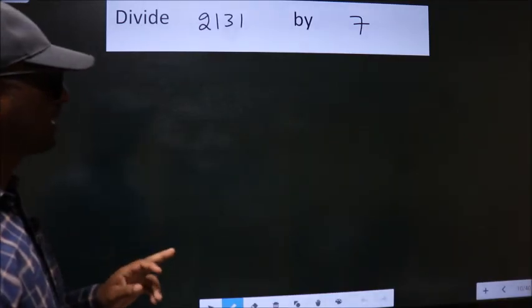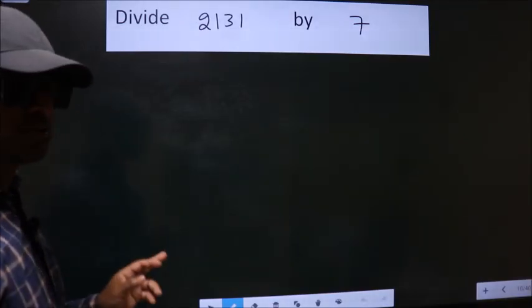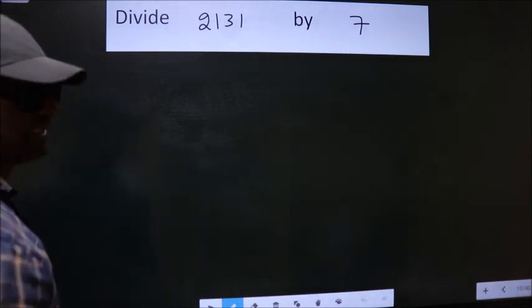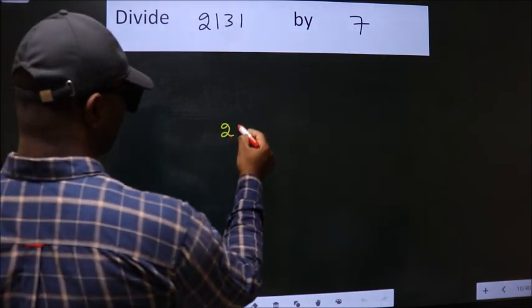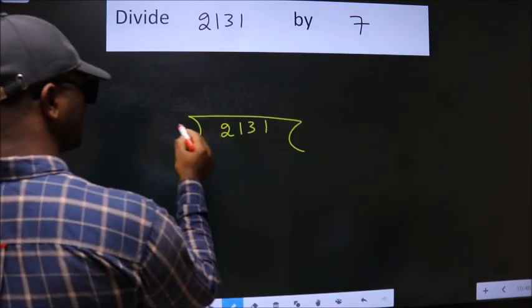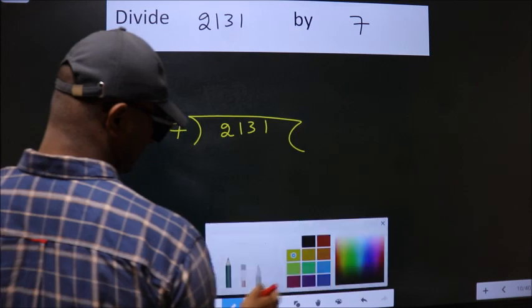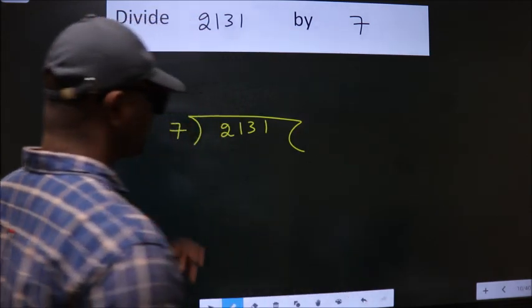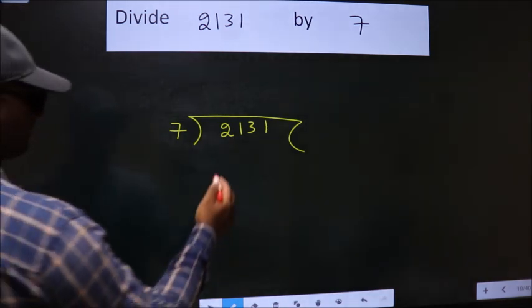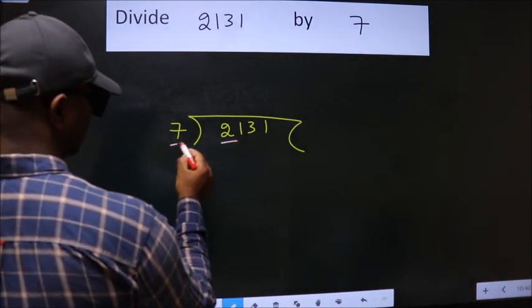Divide 2131 by 7. To do this division, we should frame it in this way: 2131 here, 7 here. This is your step 1. Next, here we have 2, here 7.